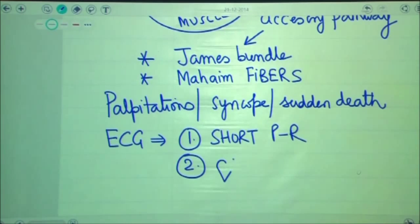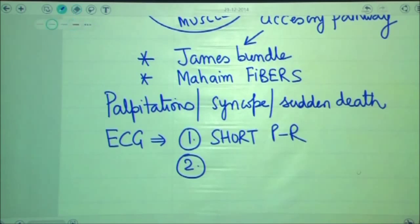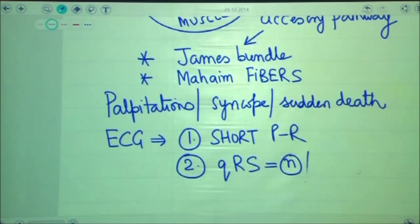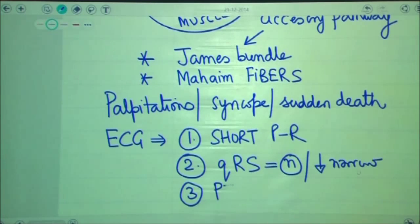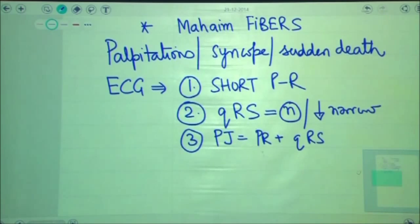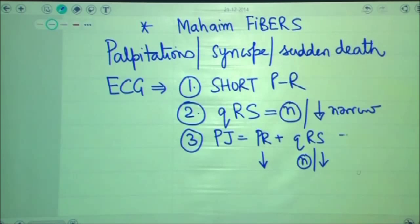Since the current comes directly to the bundle of His and is not going into the muscle — unlike WPW where the current was going into the muscle — the QRS will mostly be normal or even narrow because of faster conduction occurring into the bundle of His. Mathematically, the PJ interval, which is the sum of PR plus QRS, will show: PR is narrow, QRS is narrow or normal, so PJ will be short.